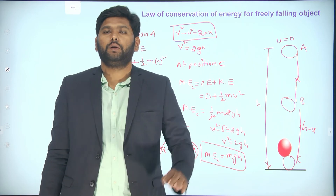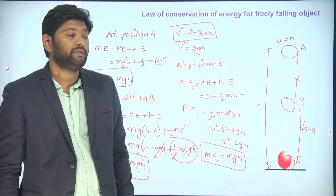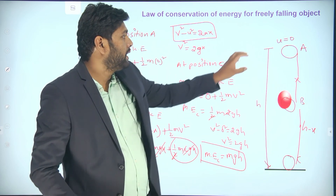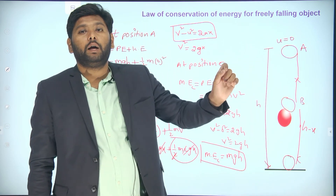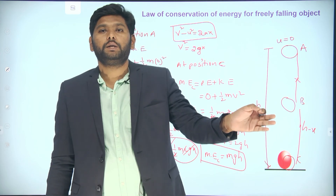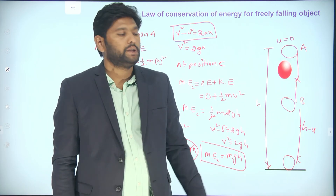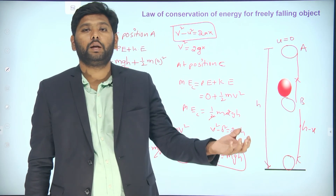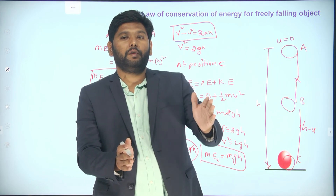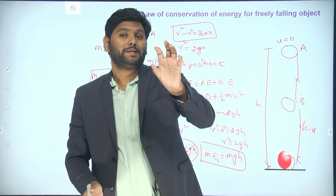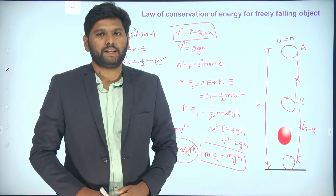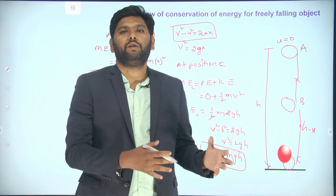The conclusions are: when the object is at position A, the energy is in the form of potential energy. As the object moves downward, the energy gets converted into kinetic energy. When it reaches the ground, total energy is fully converted into kinetic energy. So potential energy got converted into kinetic energy, but the total energy remains the same. That is what the law of conservation of energy states — we can conserve the energy for different kinds of situations.